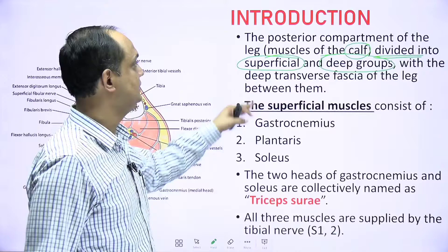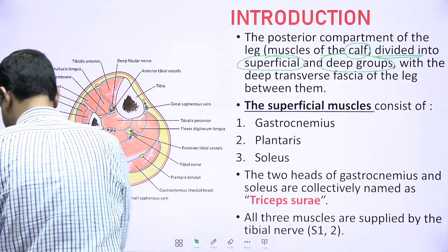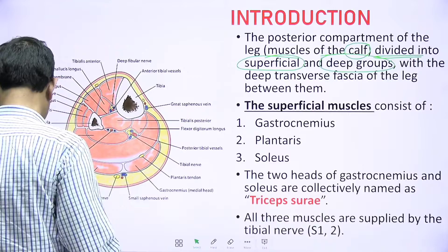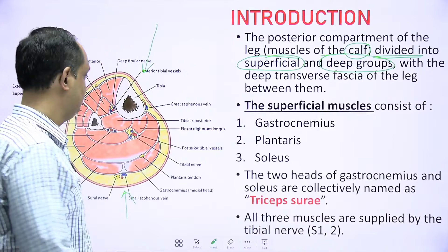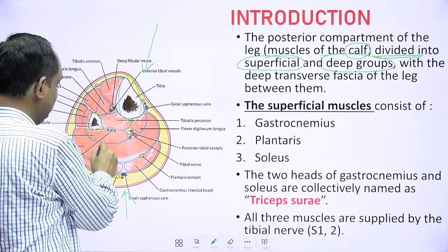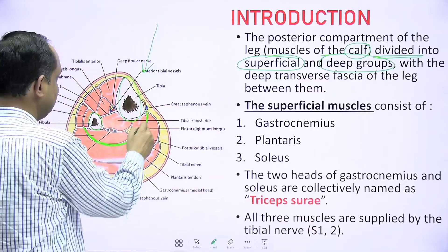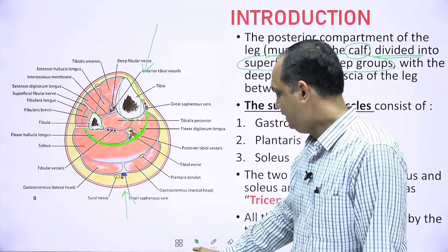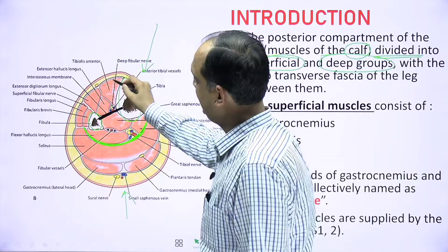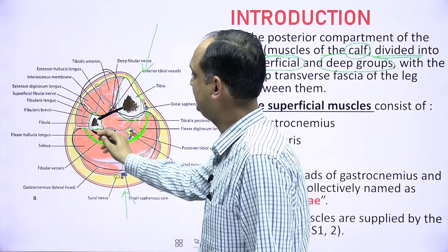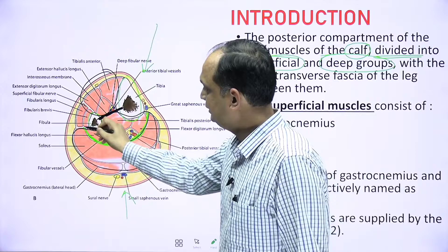The posterior compartment is divided into a superficial group of muscles and a deep group of muscles by a transversely placed fascia. In the diagram you can appreciate this transversely placed fascia. This is the posterior part of the leg; anteriorly you have the tibia, the fibula, and an interosseous membrane between them. The area anterior to the interosseous membrane is the anterior compartment, and posteriorly is the posterior compartment.